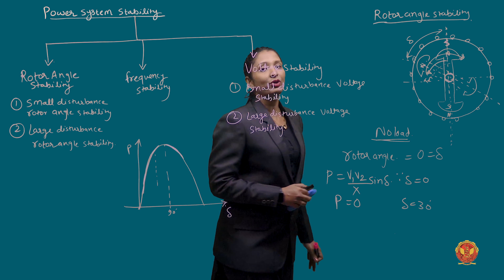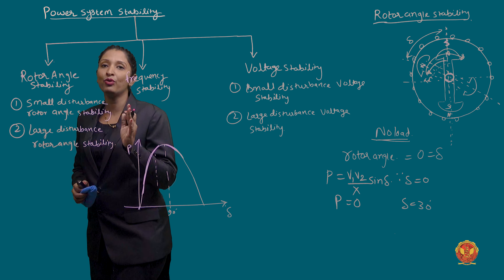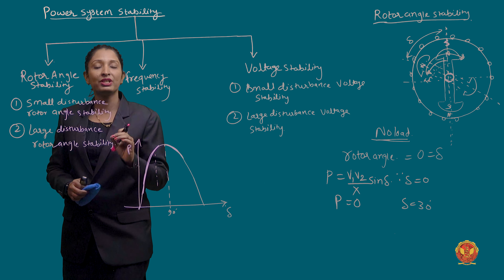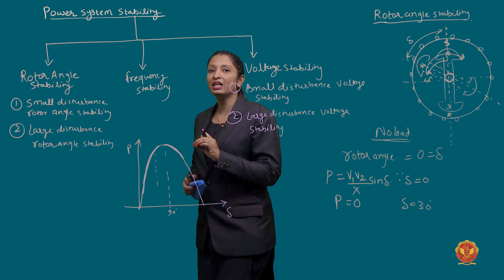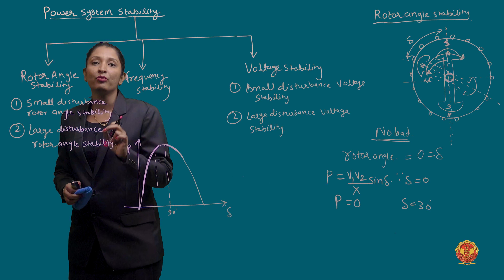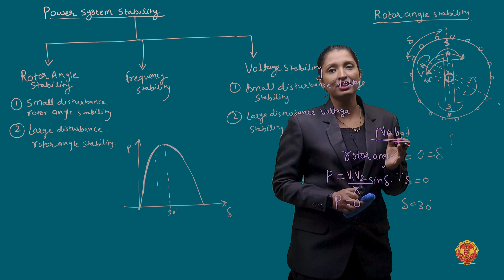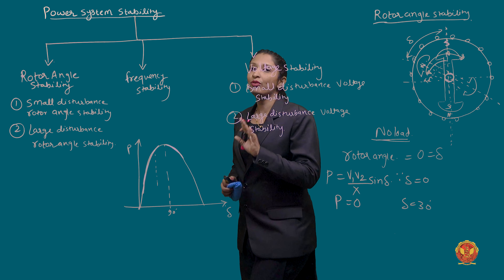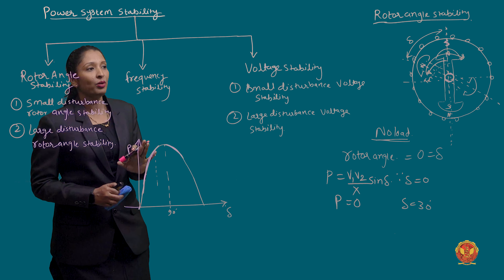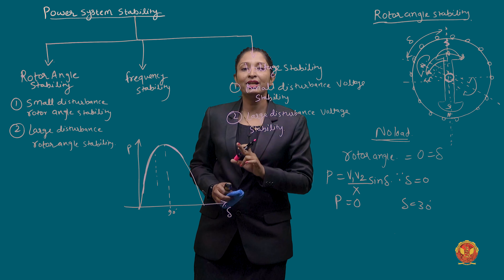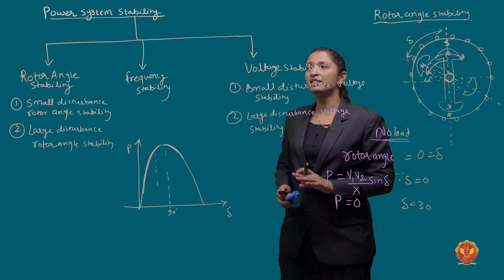Next, let's go to voltage stability. When we talk about voltage stability, we need to maintain the voltage within the acceptable range. The voltage should not fall below the range. It depends on the supply of reactive power and the load demand for reactive power. Reactive power can be supplied through generators or compensation devices. If the load demand is satisfied, voltage remains within the range.